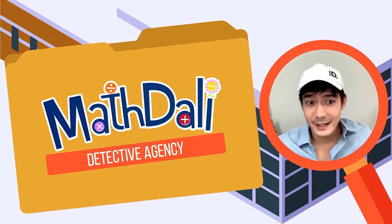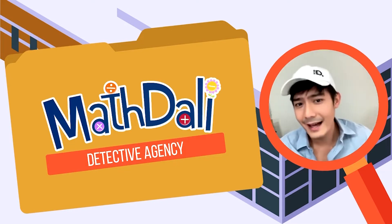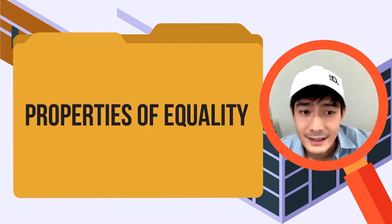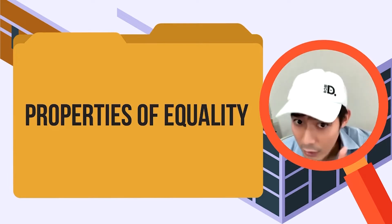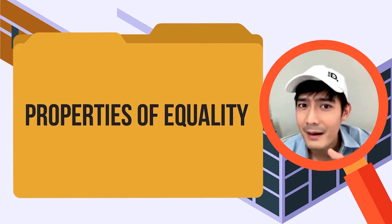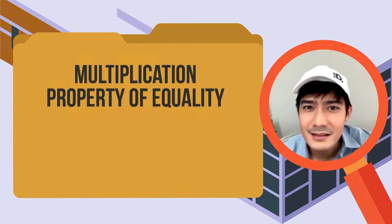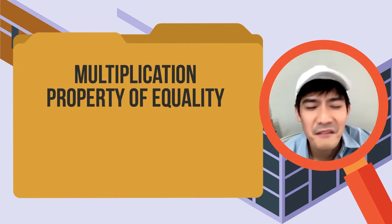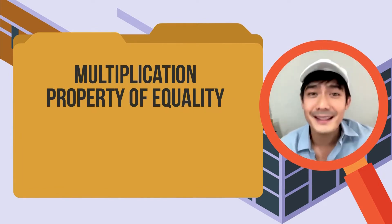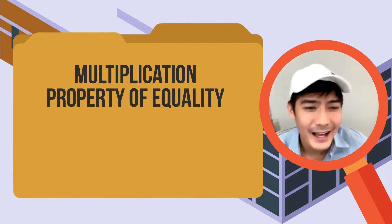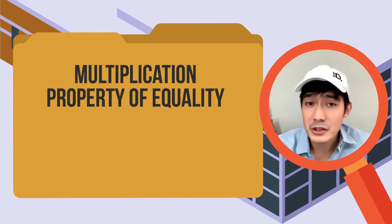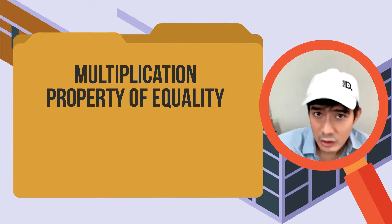Last time, na-practice po natin yung paggamit ng Addition and Subtraction Property of Equality sa paghanap ng unknown. Ngayong araw, mapupunta tayo sa ibang properties — Multiplication and Division Properties of Equality naman tayo.